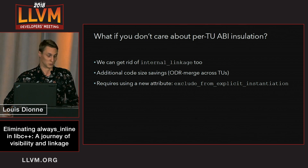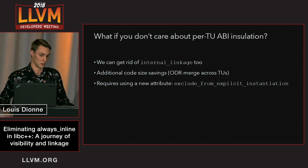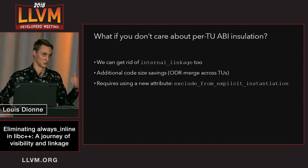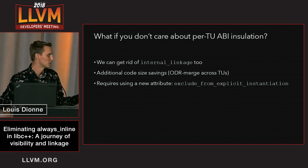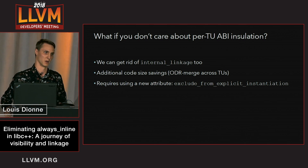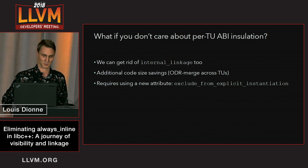Doing that actually requires using a new Clang attribute called exclude_from_explicit_instantiation, which is documented. It basically excludes something from an explicit instantiation.